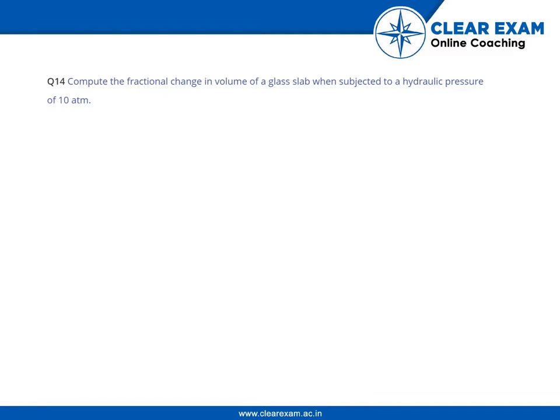The question is: compute the fractional change in volume of a glass slab when subjected to a hydraulic pressure of 10 atmospheres. Bulk modulus of glass is BG = 3.7 × 10^10 N/m². Pressure P = 10 atm.